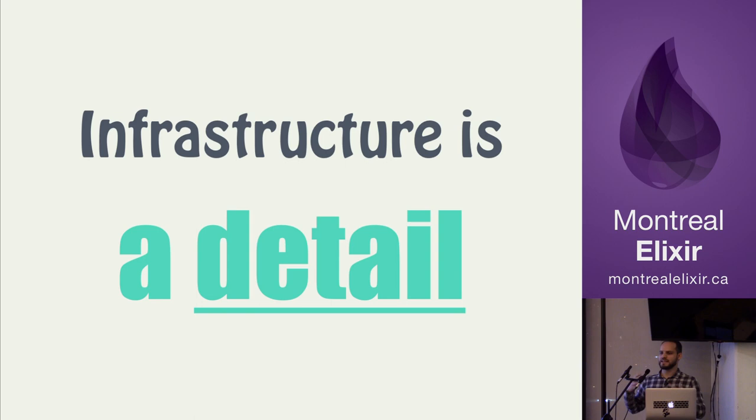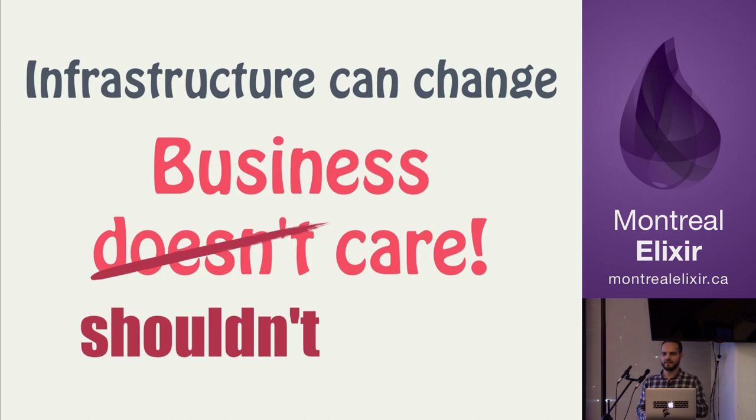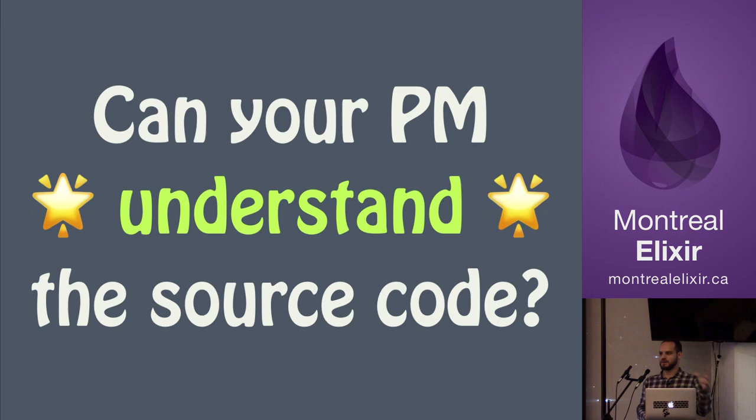The infrastructure — the part of the software that is infrastructure — is a detail. We don't care that much which kind of database we'll be using in production at the end. The infrastructure should be able to change without the business caring. I could be using MongoDB or PostgreSQL and the business people don't care — they just want it to work. So ask yourself: can your project manager read your source code and understand the business part of it?